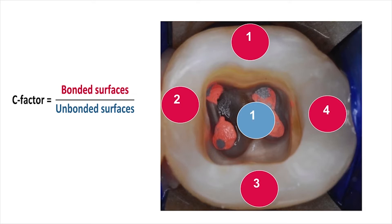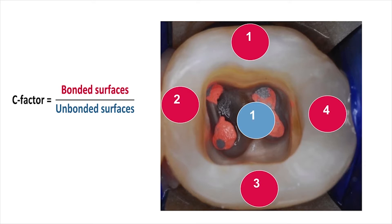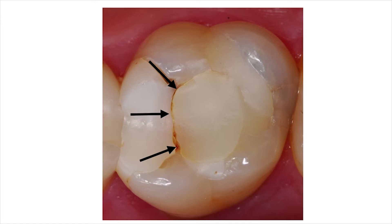When filling an endodontic access cavity with composite resin, we are dealing with a very high C-factor configuration where the shrinkage stress will be very high. The C-factor is determined by dividing the number of unbonded surfaces into the number of bonded surfaces, as you can see on this slide. In most endodontic access cavities we will have a C-factor of 4 when we do the calculation. Here is an example of an endodontic access cavity that was filled in bulk with composite resin, and we can clearly see evidence of coronal leakage that happened over a period of time.